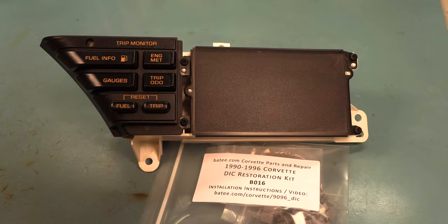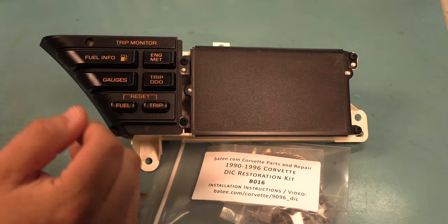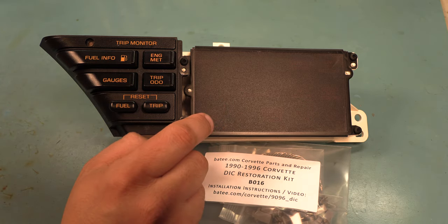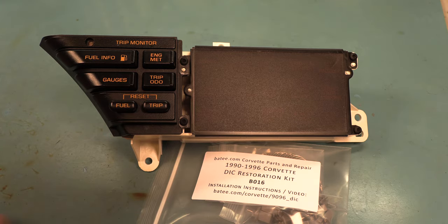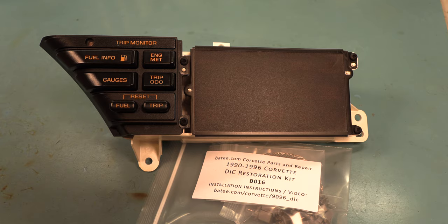Today we're going to restore this 1990-1996 Digital Information Center. Features that we're going to address would be the photocell, the electrical switches behind these buttons, and the light bulbs which light up the telltale lights. To do that we're going to use the 1990-1996 Corvette DIC Restoration Kit from Batty.com.